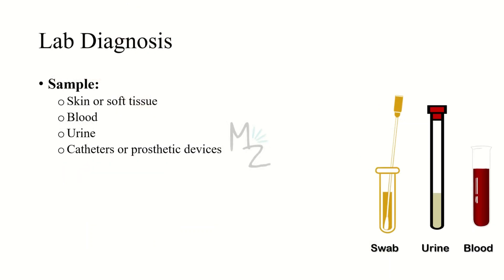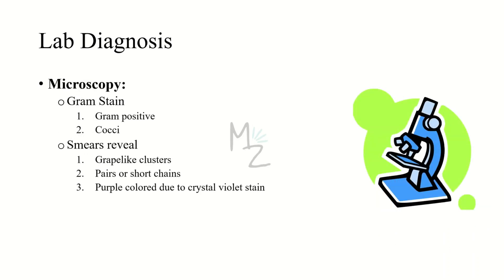Lab diagnosis: we need samples of skin or soft tissue, blood, urine, catheters, or prosthetic devices, since the bacteria and its biofilm may be present on them. The first procedure is microscopy, preceded by Gram staining. Gram stain will reveal that this organism is gram-positive cocci because it will be round in shape. Smears under the microscope will reveal grape-like clusters, pairs or short chains, and purple color due to crystal violet.